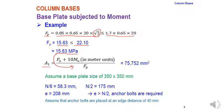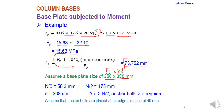Using all input parameters, A1 = 75,752 mm². Taking the square root for a square base plate and rounding gives 350 × 350 mm. So B = N = 350 mm.